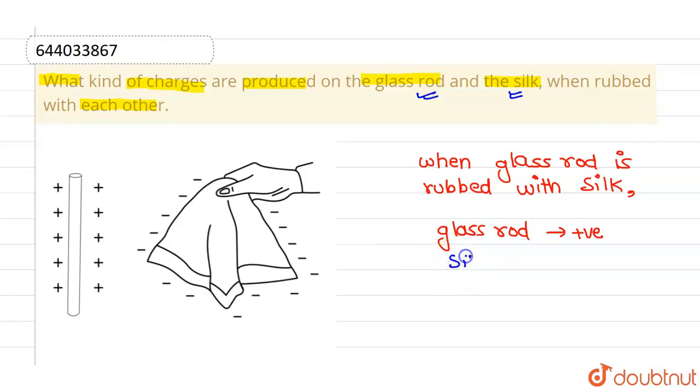And the silk cloth acquires negative charge because it receives electrons from the glass rod. Now the same thing you can see in this particular diagram also, that when the silk cloth, this is silk cloth...